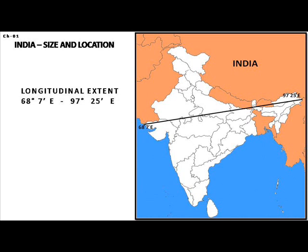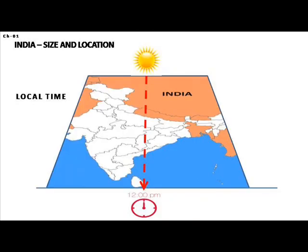Despite the difference in sunrise and sunset, most countries follow the same time throughout. Local time refers to the time at a particular place — that is, the time when the midday sun is directly overhead. Different places in the same country have their own local times, which is why the sun rises at different times in Arunachal Pradesh and Gujarat.